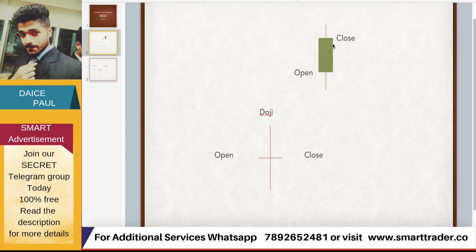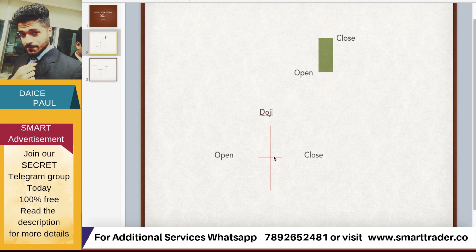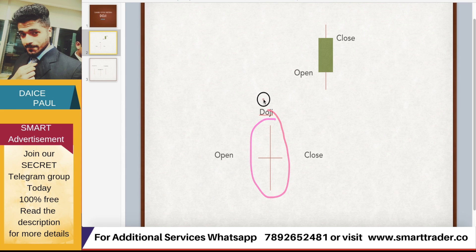What is the specialty of doji? How do you know a candlestick pattern is a doji? Whenever the open price and the close price are equal — normally they say virtually equal — so when you see they are almost equal, it is called a doji pattern. Whenever this type of pattern comes in the chart, it is named a doji pattern.